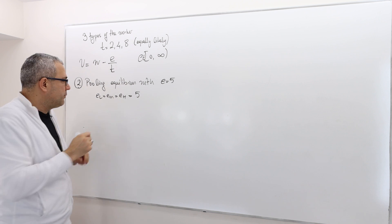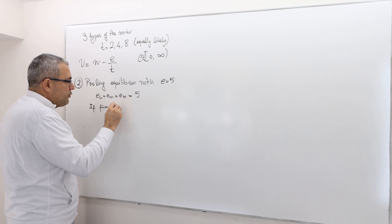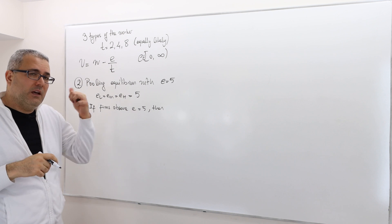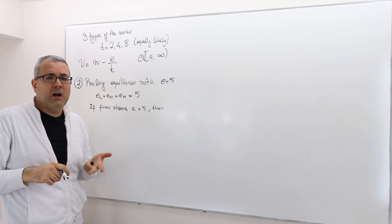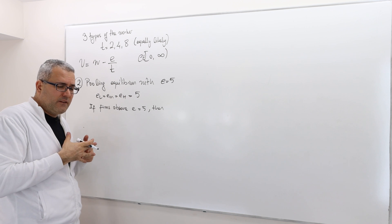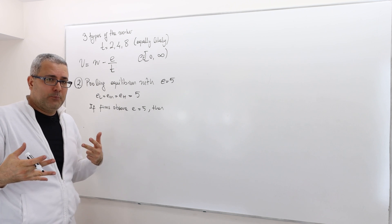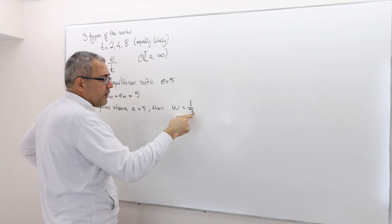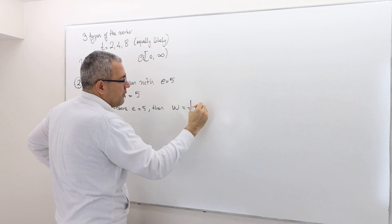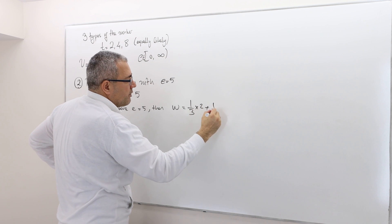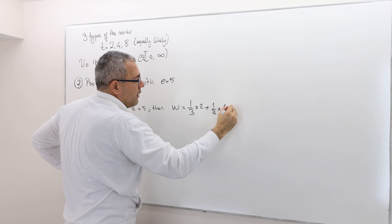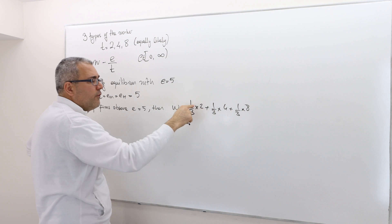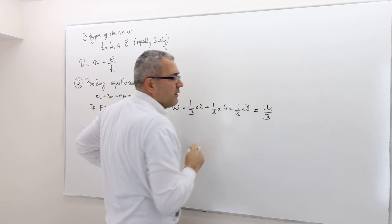In this case, if firms observe E equal to 5, they're going to say this could be low type, medium type, or high type — we don't know. So we calculate the expected productivity. The expected wage, therefore, is going to be: 1/3 probability it comes from type T equals 2, 1/3 probability from type T equals 4, and 1/3 probability from type T equals 8. So that means (2+4+8)/3 = 14 divided by 3. Let's leave it as is — this is going to be the wage.